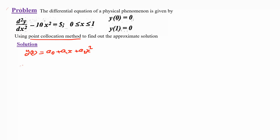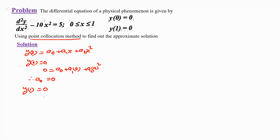Now apply the boundary conditions directly to this equation. For y(0) = 0: substituting x = 0 gives a₀ + a₁(0) + a₂(0)² = 0, therefore a₀ = 0. Now apply the second boundary condition y(1) = 0: since a₀ is already 0, we get 0 + a₁(1) + a₂(1)² = 0.